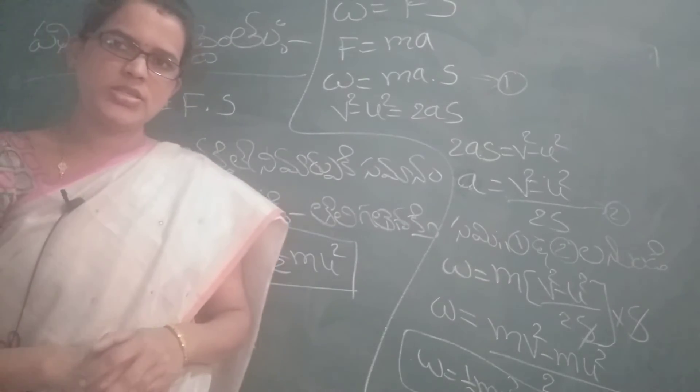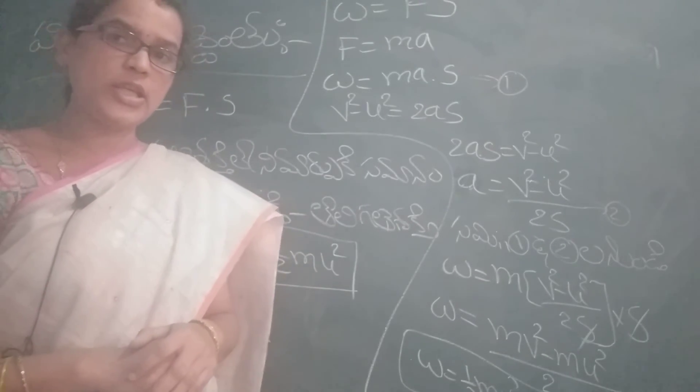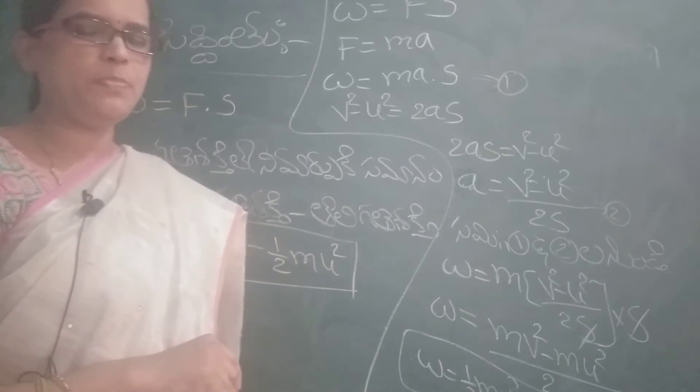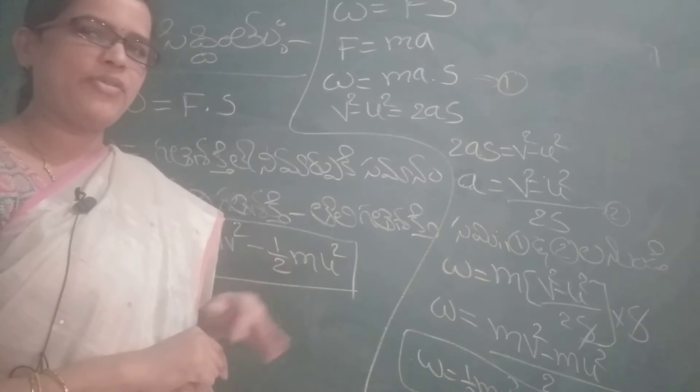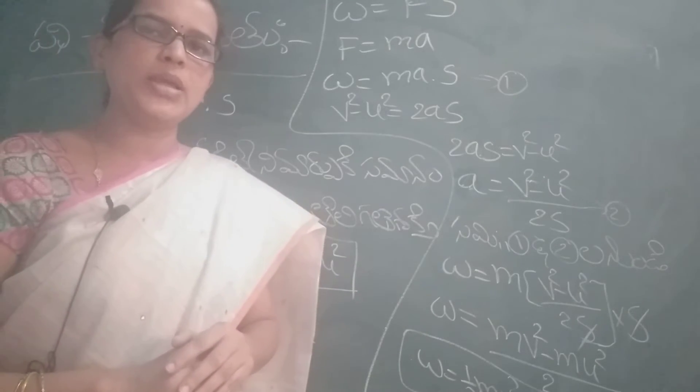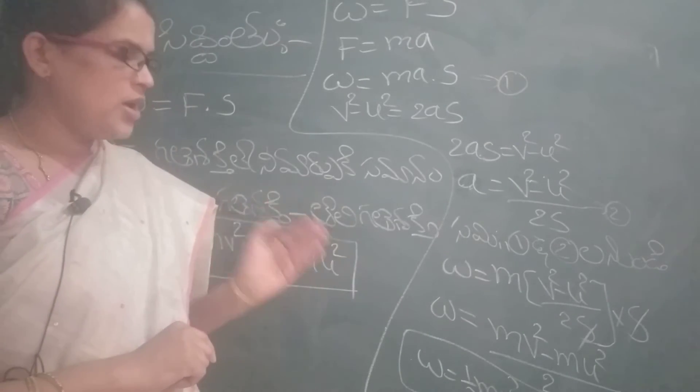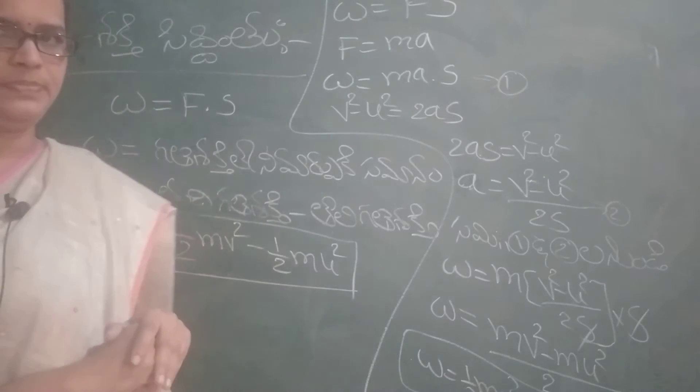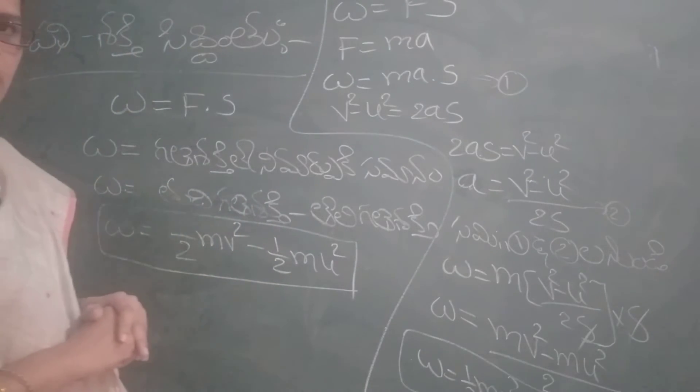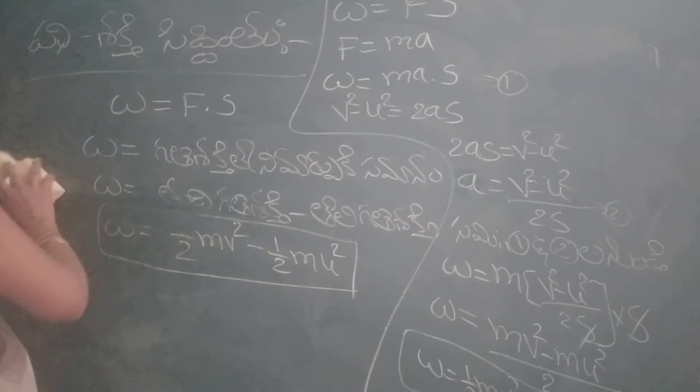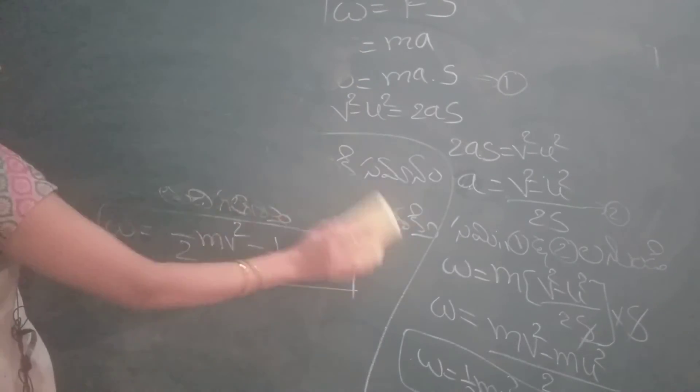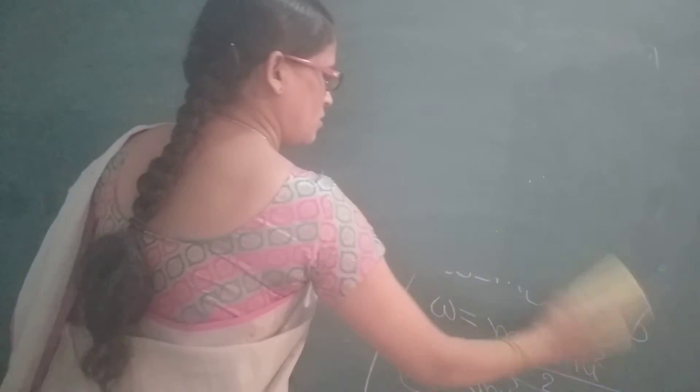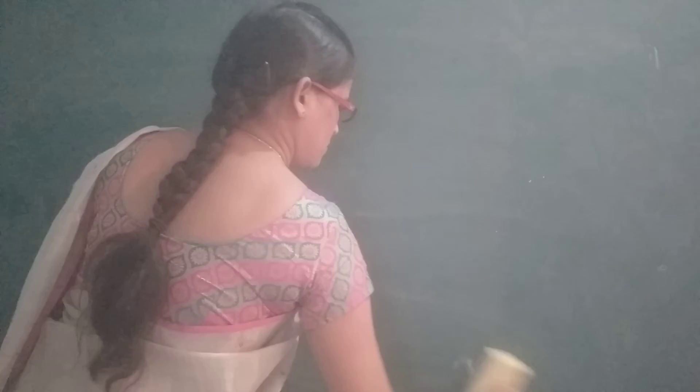Cancel. W is equal to half m v square minus half m u square. W is equal to half m u square.